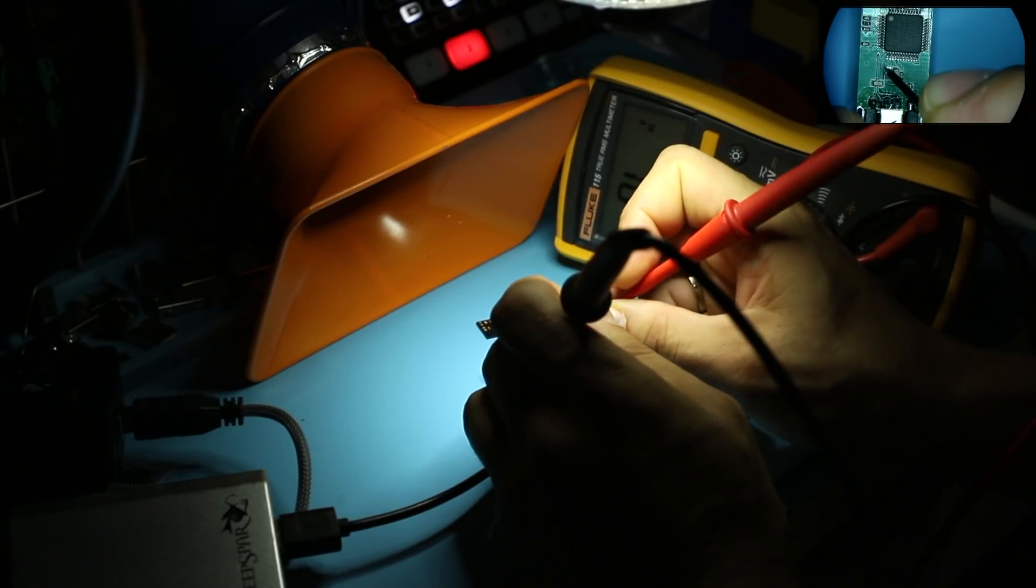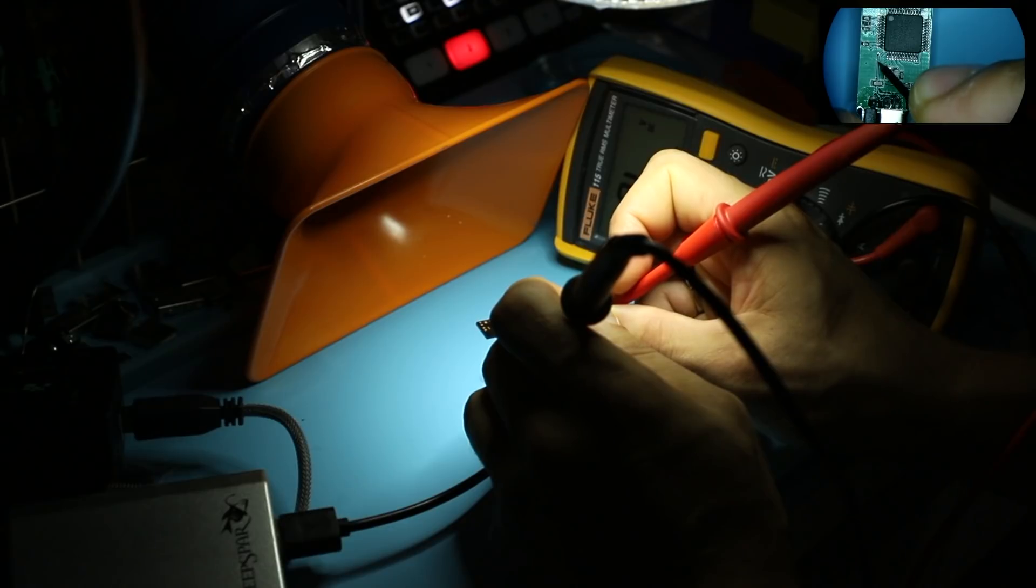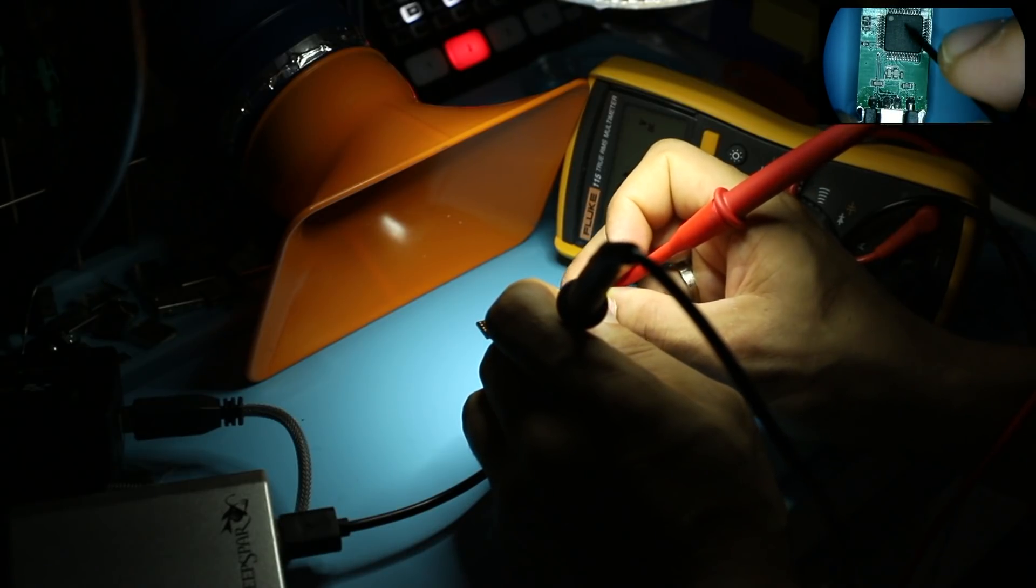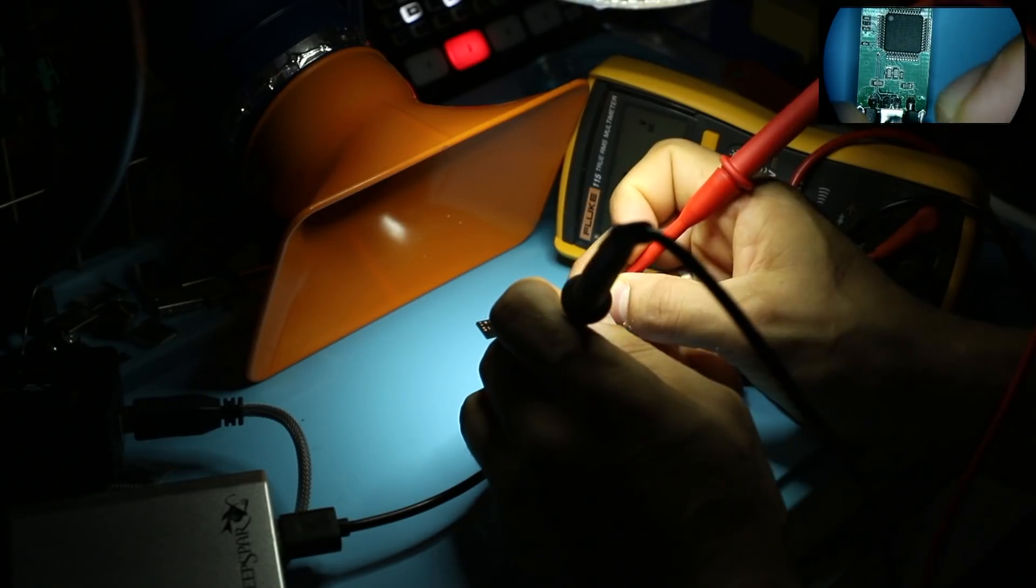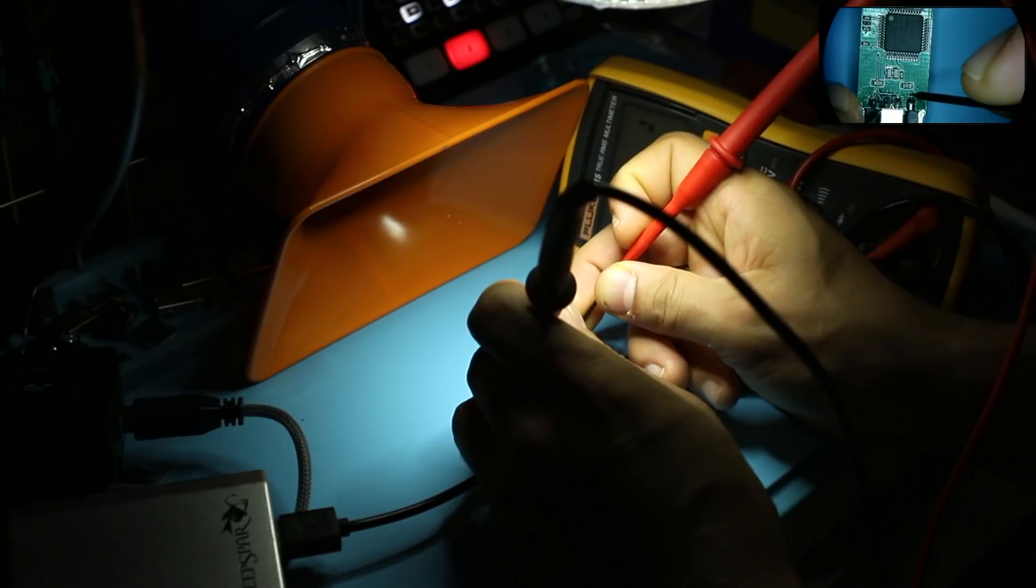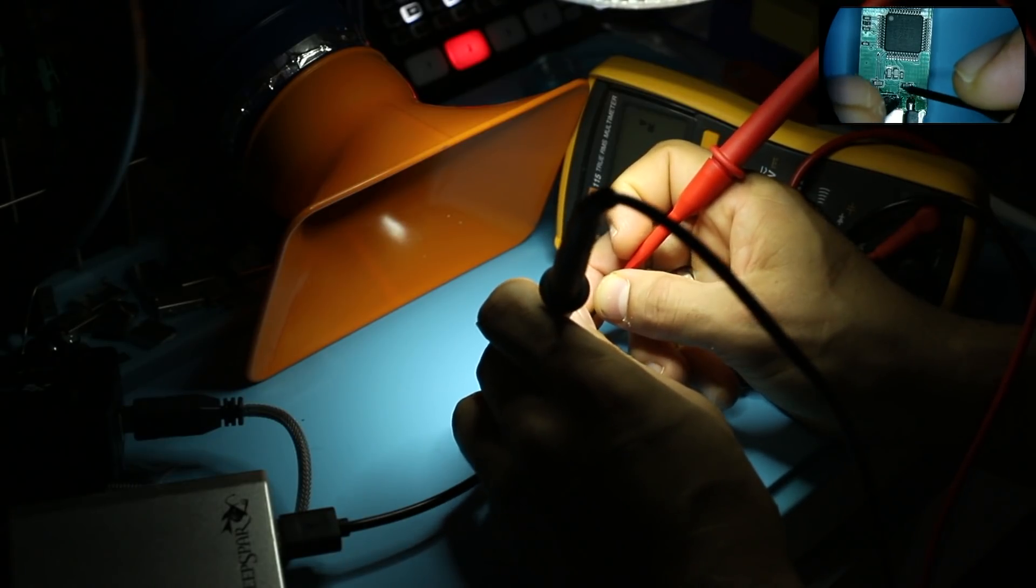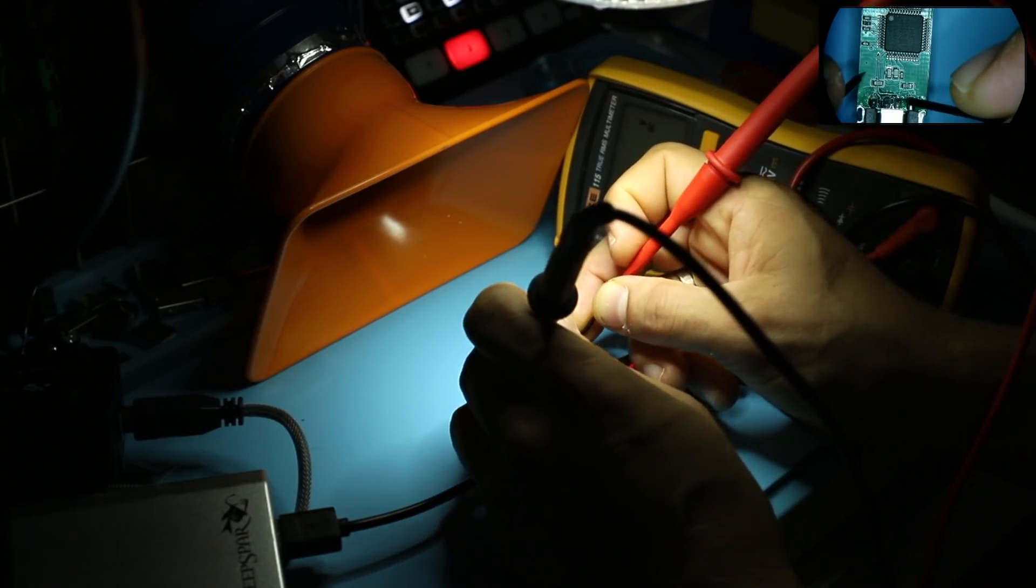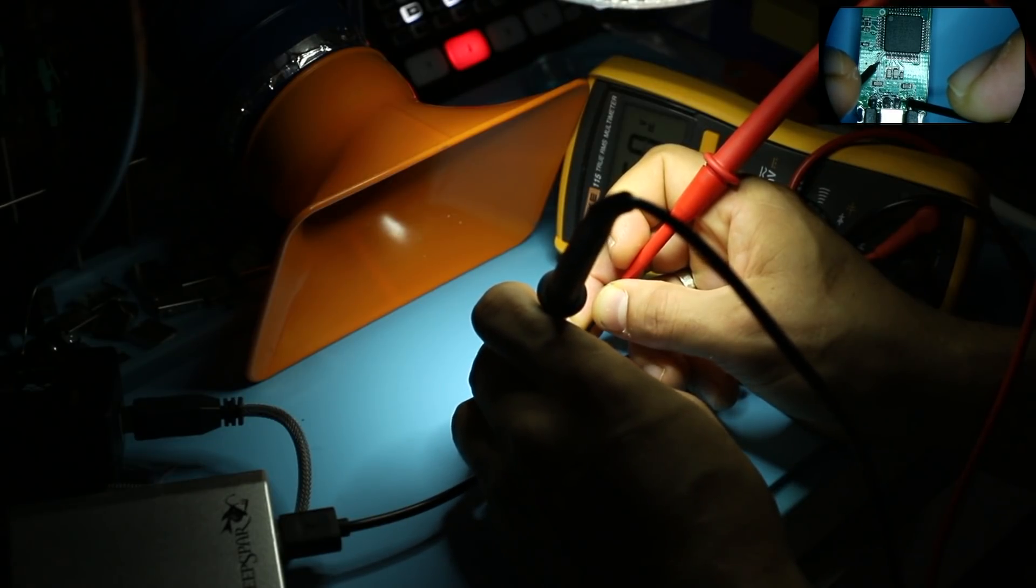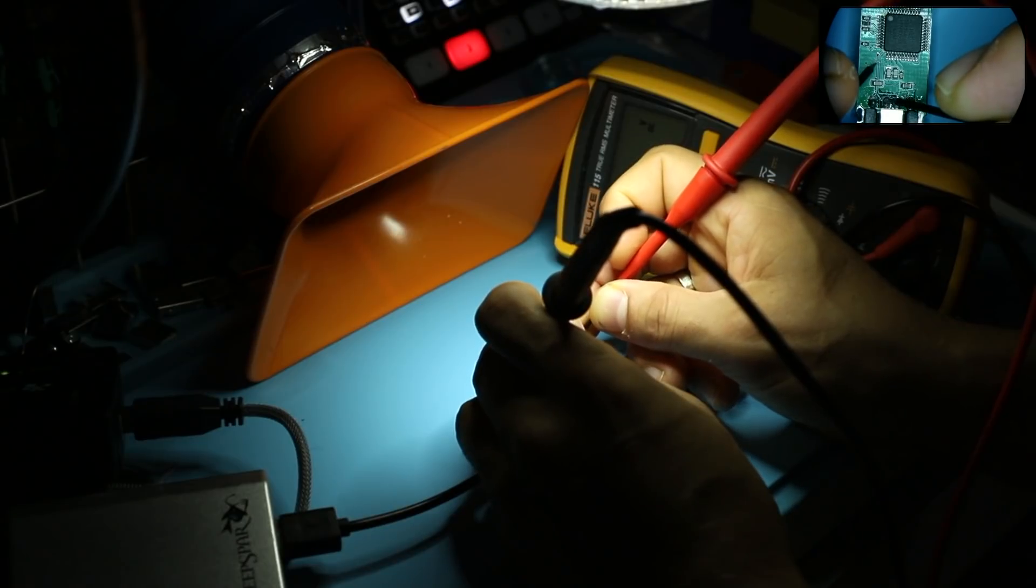So I slashed these here to expose these two tracks. These two traces go under the controller and mount somewhere. One is going to run to data plus one is going to run to data minus. Let's make sure that they're attached. So if they're attached we should hear this beep. Yeah this one is attached.